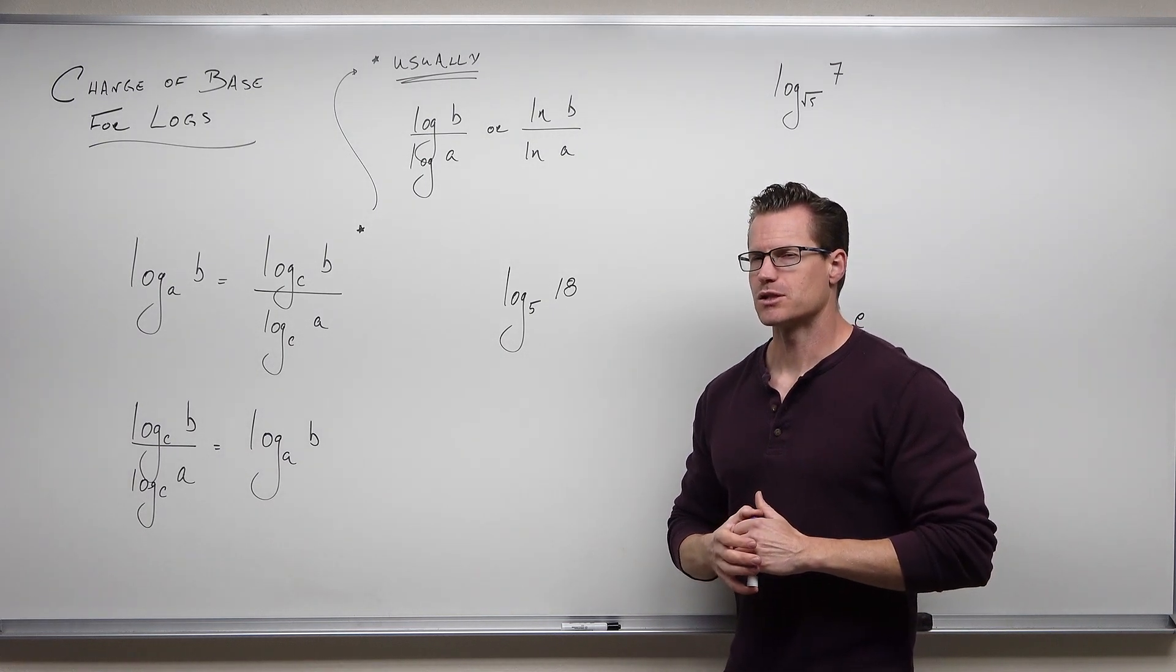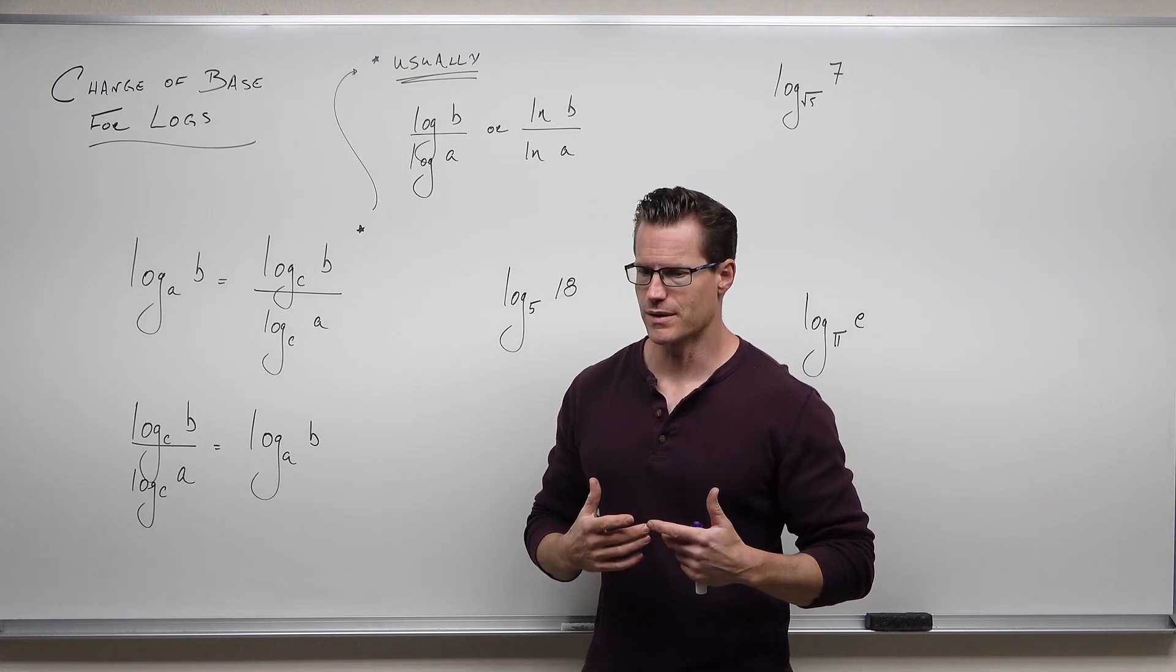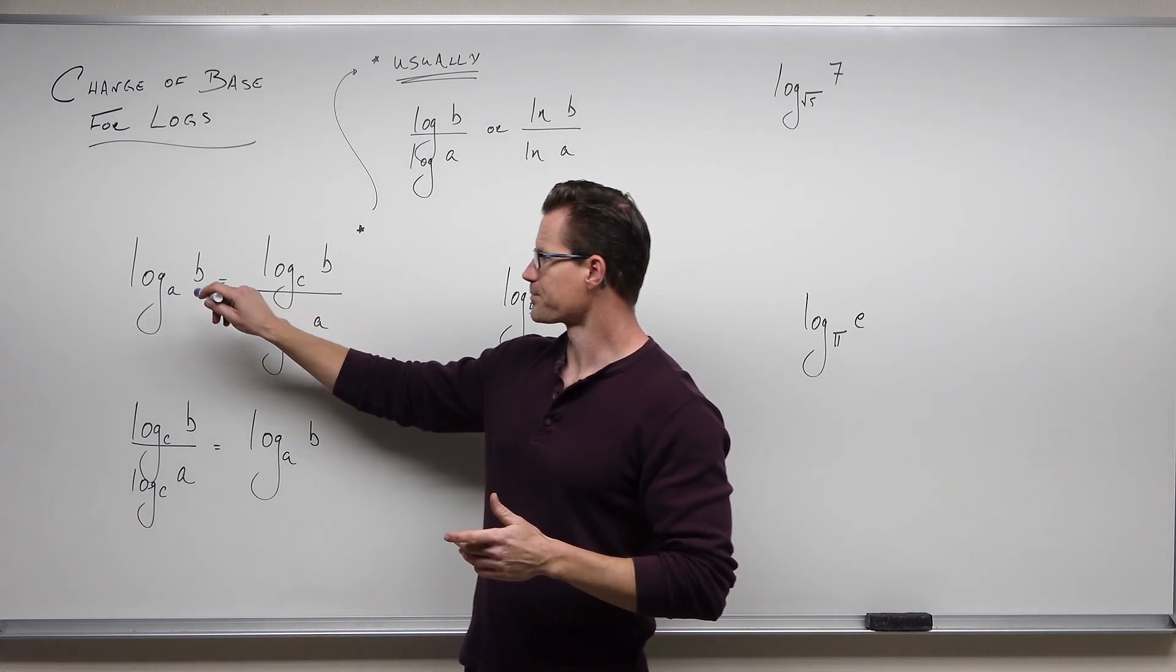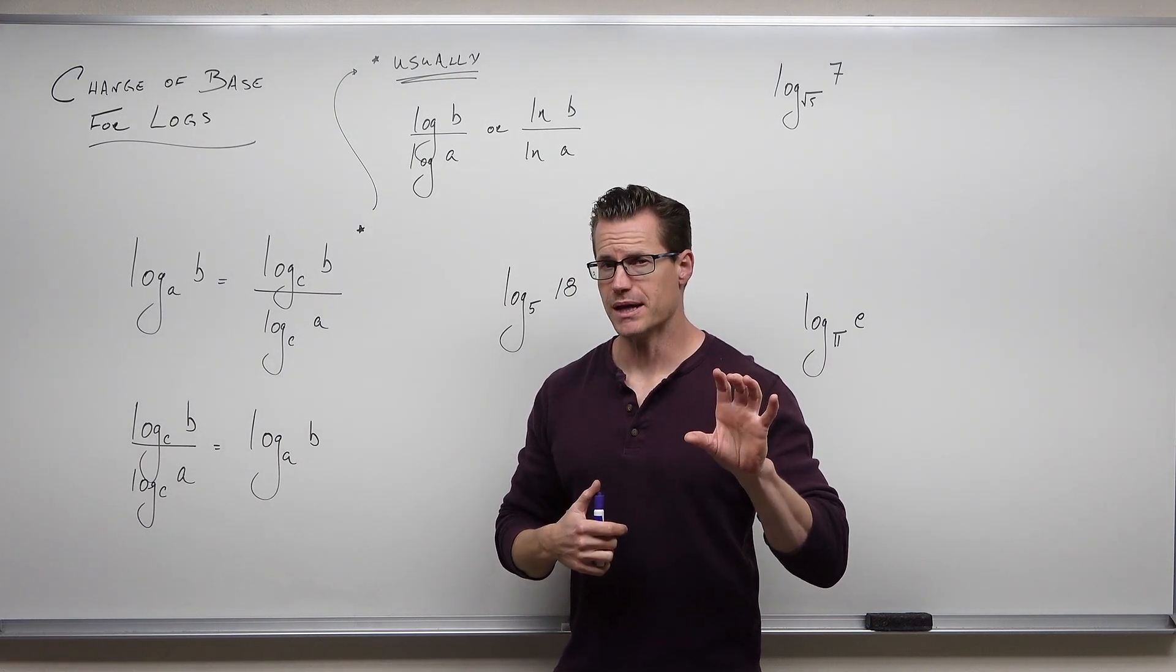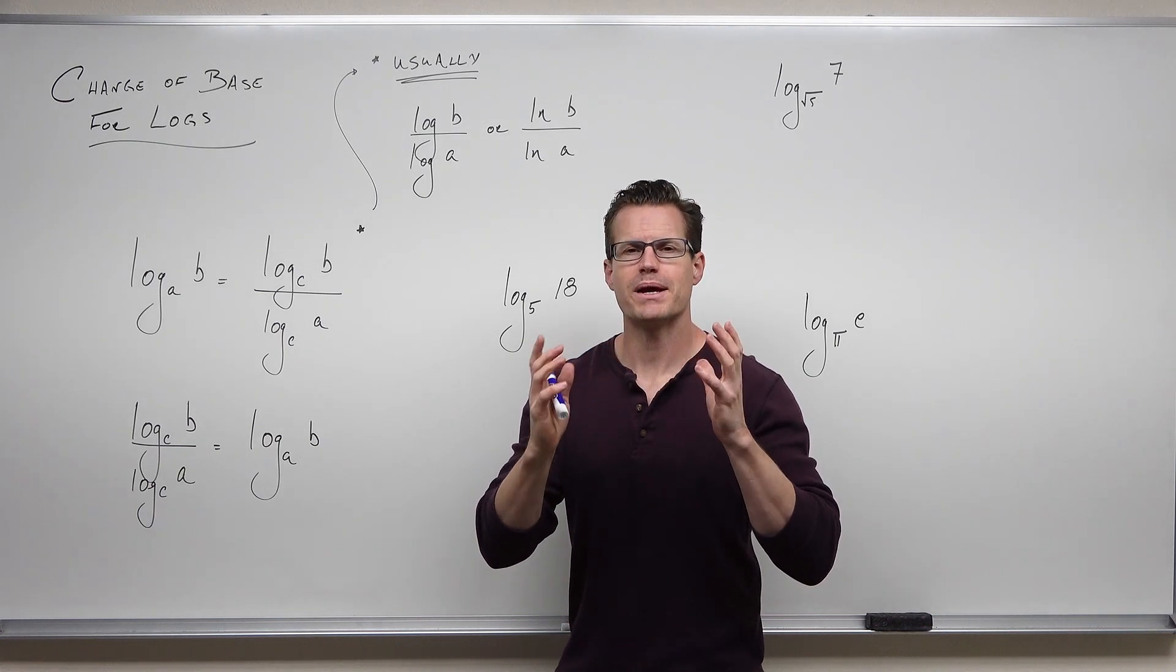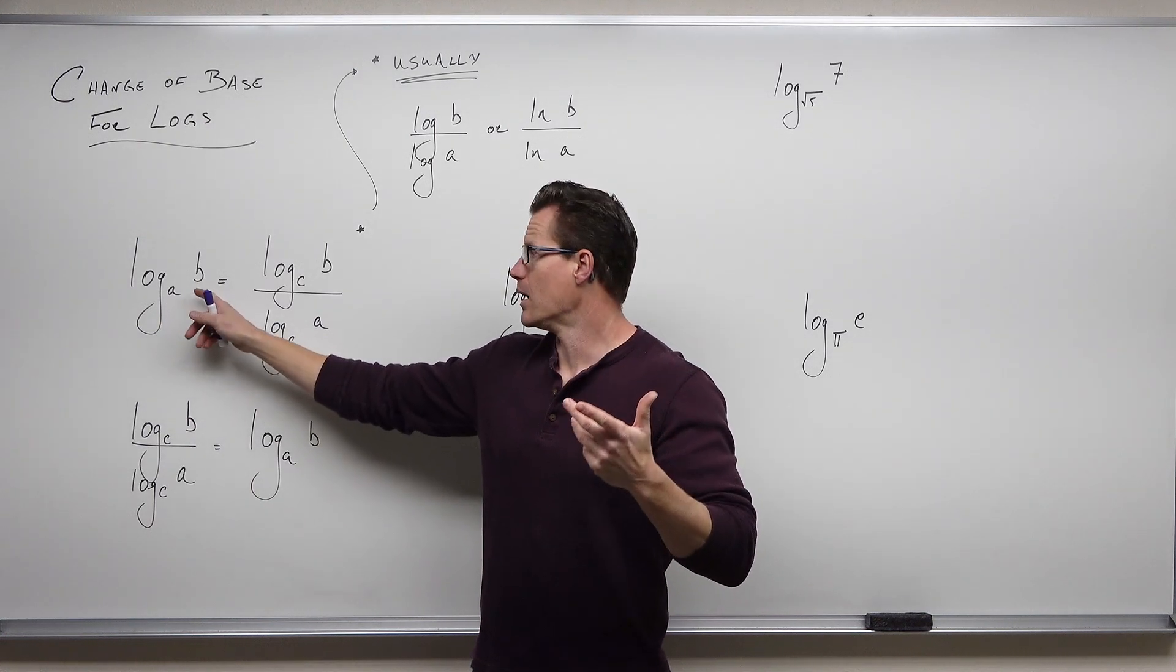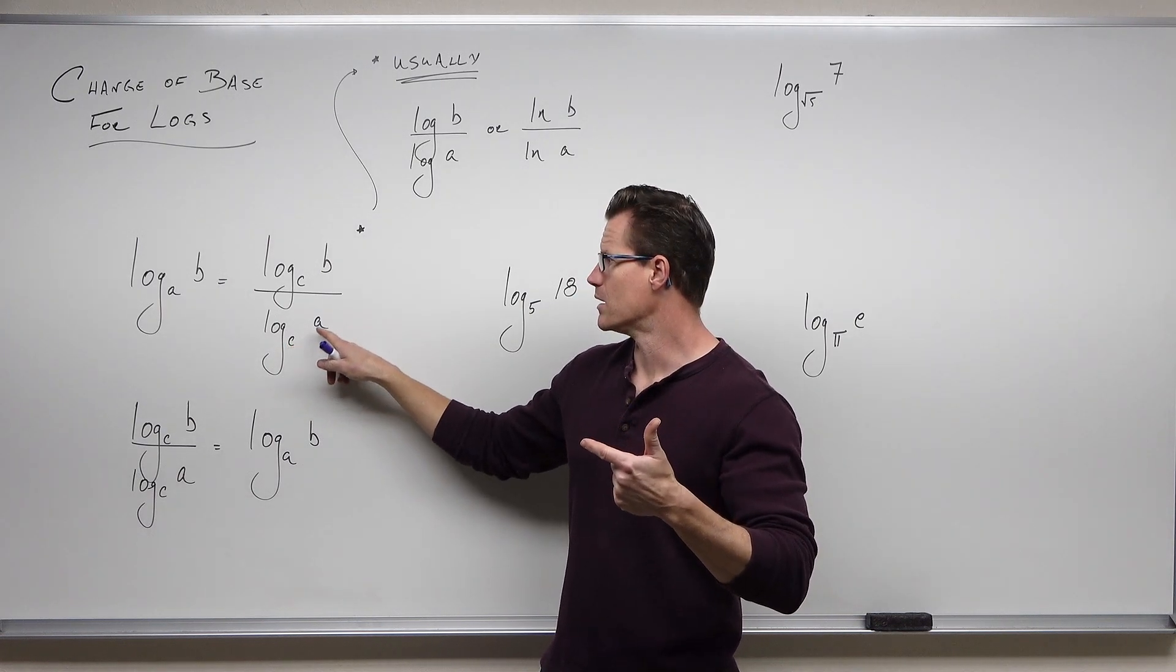I've written the change of base formula twice because formulas are often two-way streets. Here's what it says: if you have a logarithm with whatever base you have, you can always change the base of your logarithm by creating a ratio. Pick whatever base you want. So if I have log base A, you can change it to log base anything of B over log base anything of A.